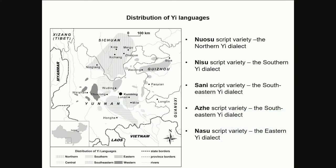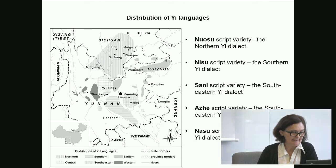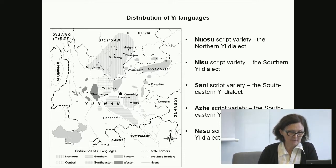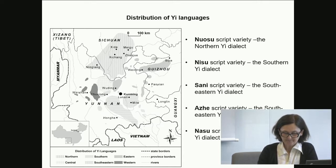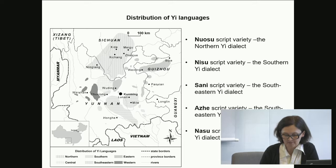The five varieties include a script used by speakers of the Northern East dialect, or Nosu; the Nisu script variety used by the Southern East dialect users; the Sani script variety; another script variety also used by Southern East dialect users; and the fifth variety, Nisu script, used by users of the Eastern dialects. These scripts demonstrate features that confirm their common origin and unity on the one hand, and features that point to diversity on the other hand.